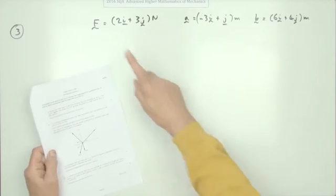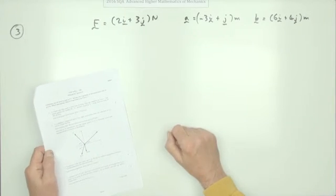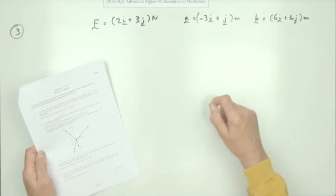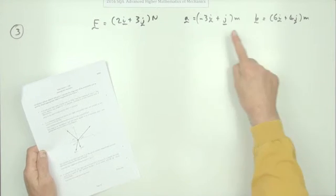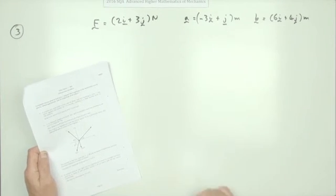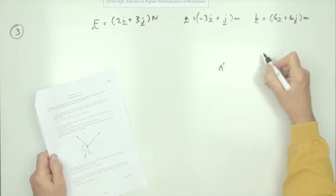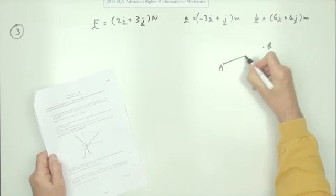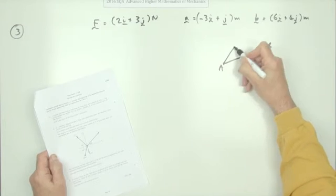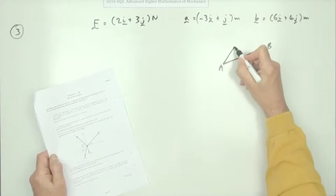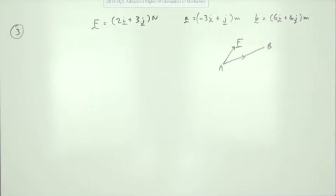All it says is there's a constant force of that magnitude and direction acting on a particle as it moves from point A to point B, given by these position vectors. So there's point A, there's point B, and as the particle moves from A to B, some force — not acting in the same direction — acts upon it. What's the work done?